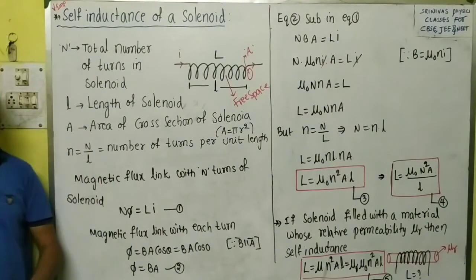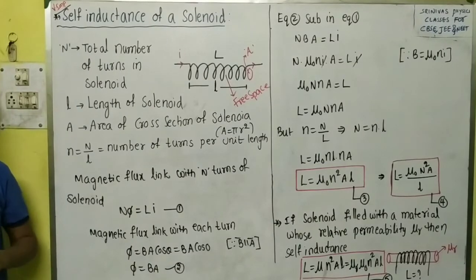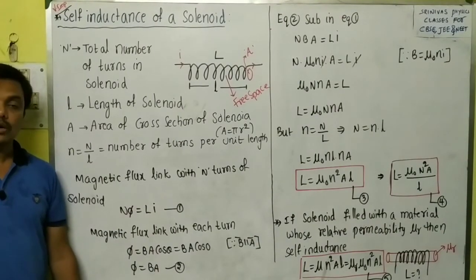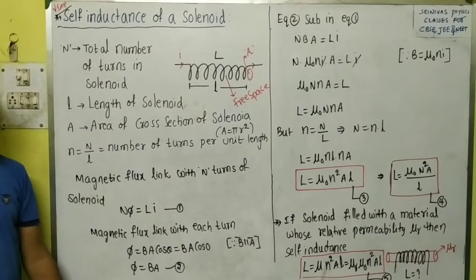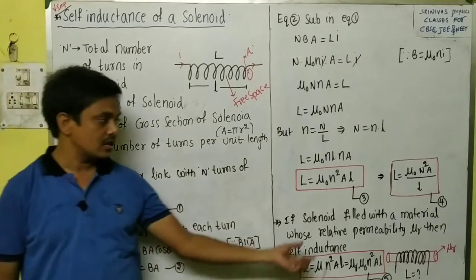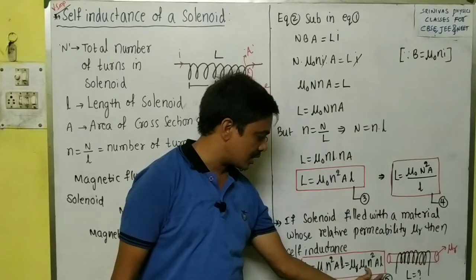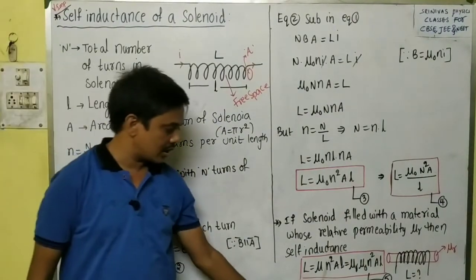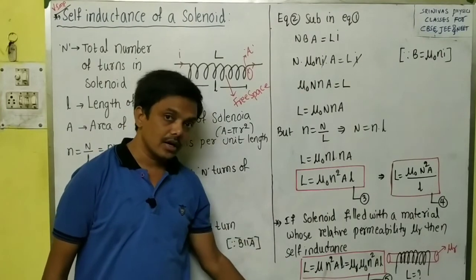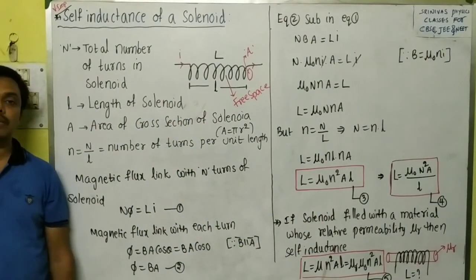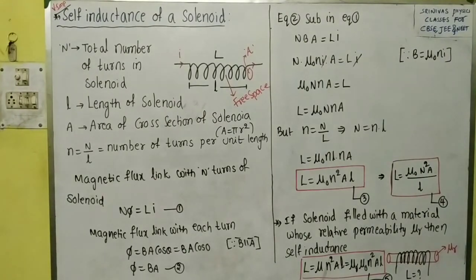This is a very important topic for exams — they will ask you to derive the self-inductance formula, and also ask what happens if the solenoid is filled with a medium of relative permeability μr. The answer is that L becomes μr times: L = μr·μ₀·n²·A·l, where μ = μr·μ₀ is the permeability of the medium, μr is the relative permeability, and μ₀ is the permeability of free space. Thank you for watching.